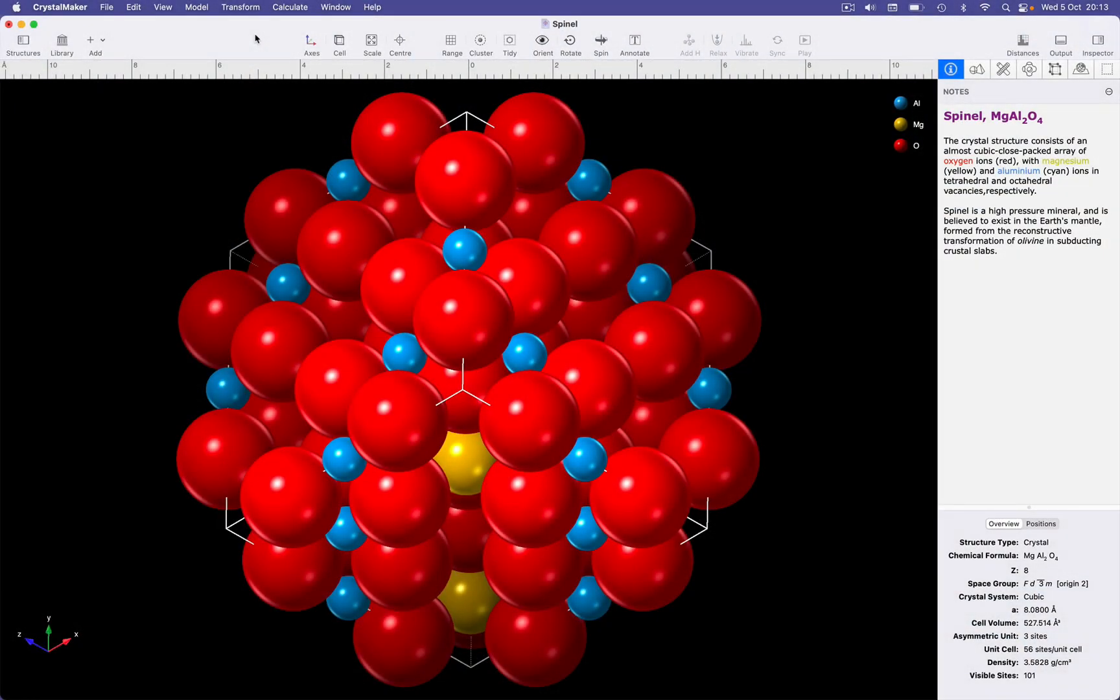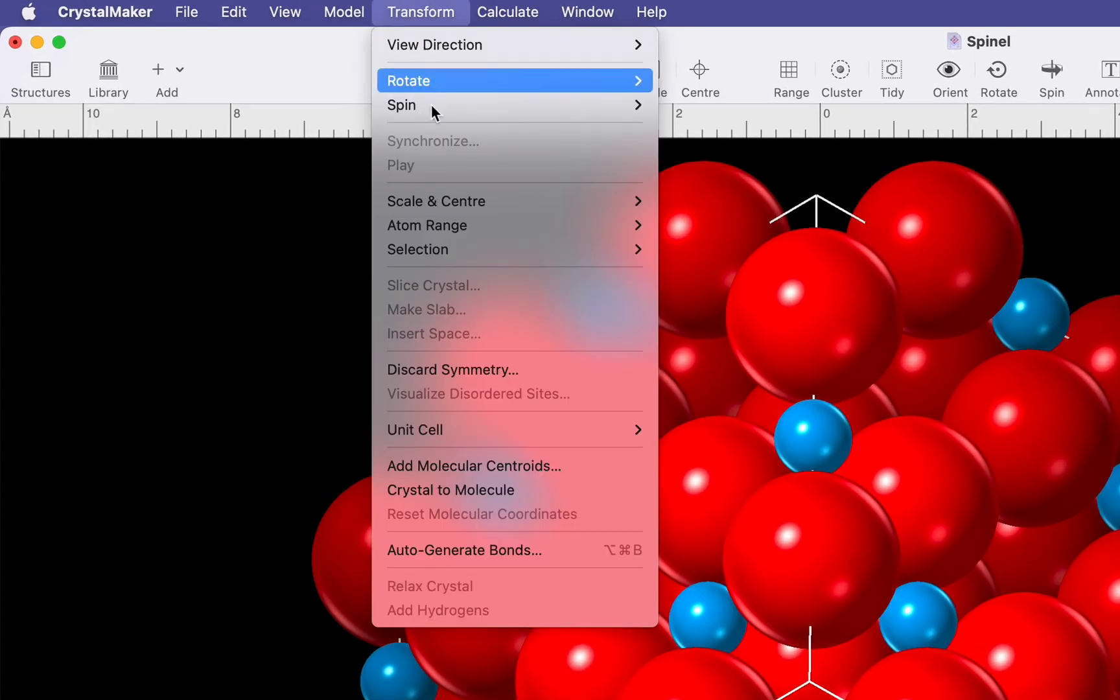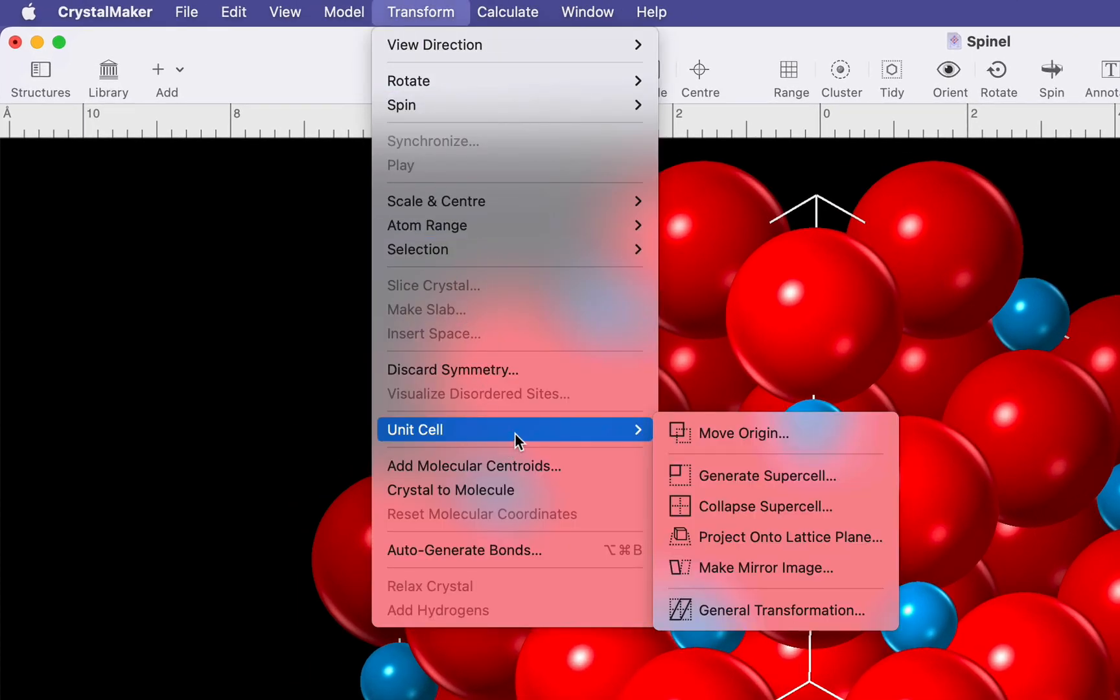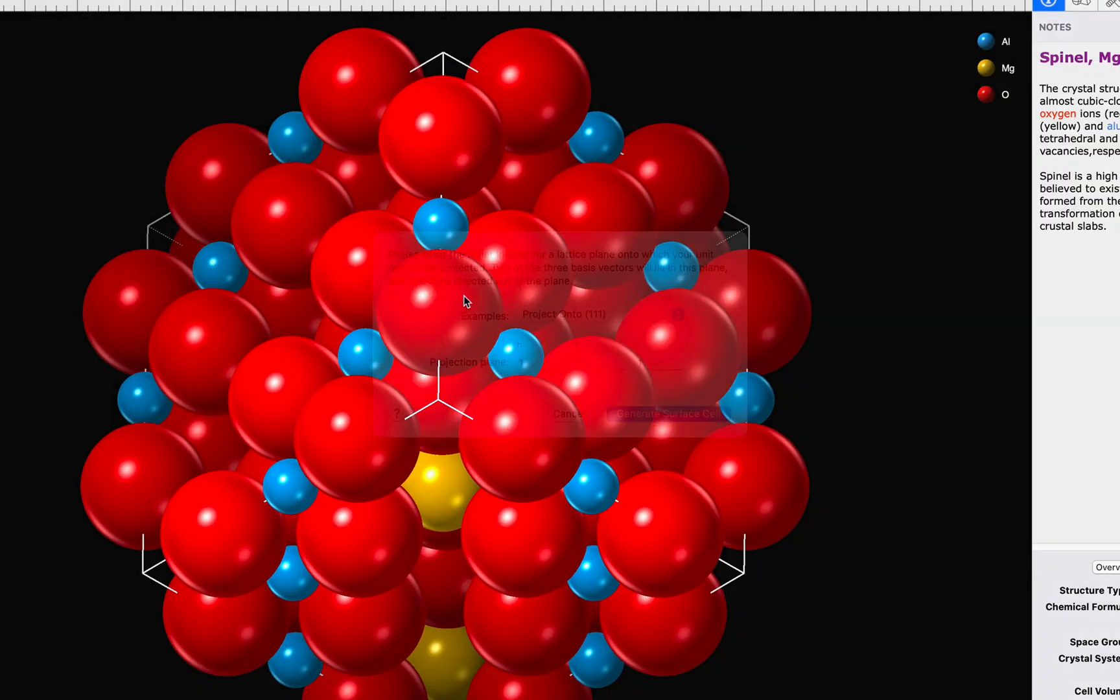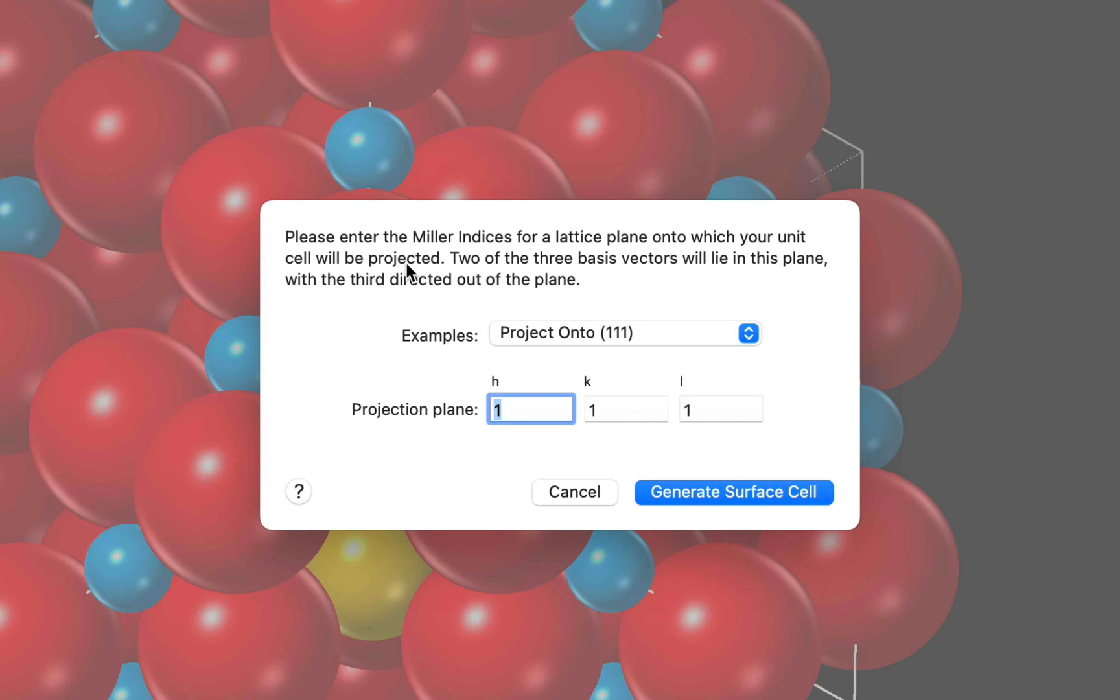To create a surface cell use the transform unit cell submenu and the project onto lattice plane command. We'll specify 111 as our projection cell and click the generate surface cell button to continue.